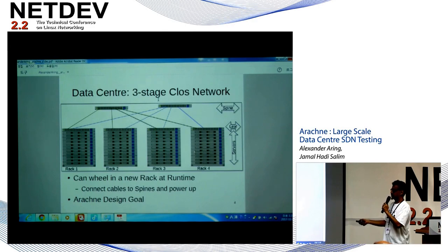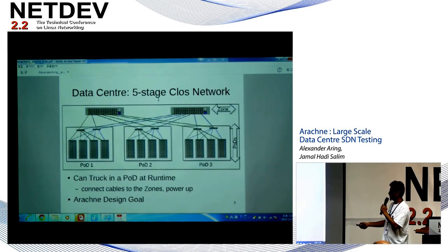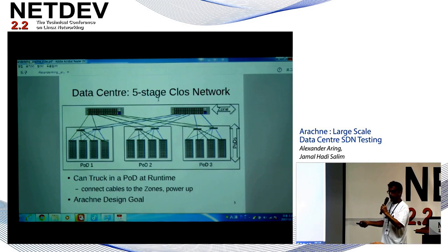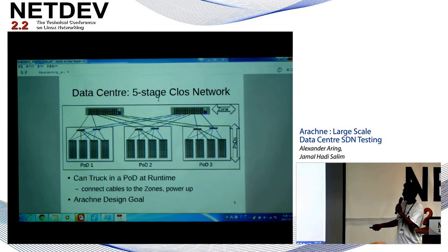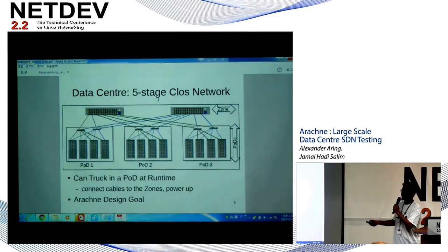In our design in Arachne, that was an interesting feature we were interested in — we wanted to emulate this. We borrow this idea as part of the test tool. Likewise, if you build a five-stage Clos network where you can get from any server to any server in five hops, you can build what's known as a pod — point of deployment — and actually build this out in the wild, wheel it into a container or a truck, connect cables, send the handyman, power this thing up. That's the theory.